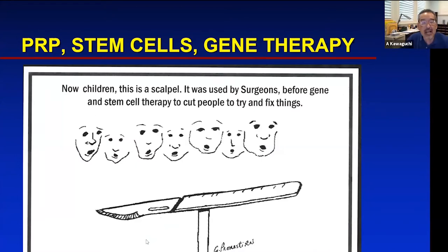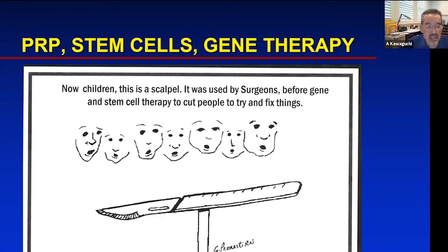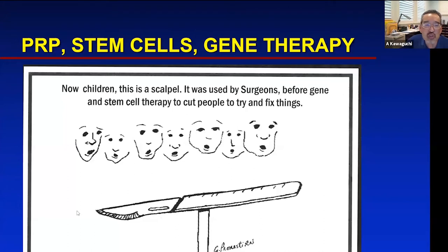This is a cartoon showing kids at a museum looking at a scalpel up on a stand, saying that back in the day this is what surgeons used to cut people and fix things — everyone's in amazement. Unfortunately, in 2020, the only way to fix knee arthritis is still using the scalpel. Hopefully a hundred years from now, stem cells and PRP gene therapy will help regenerate cartilage, but we can't do that yet.